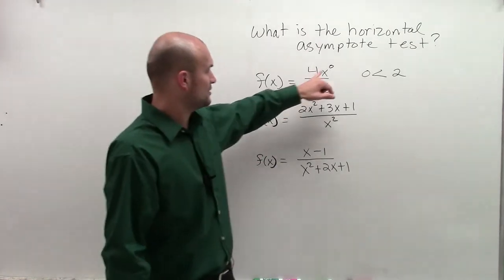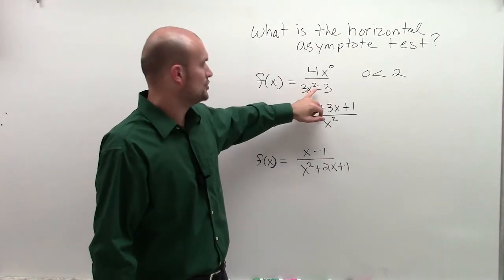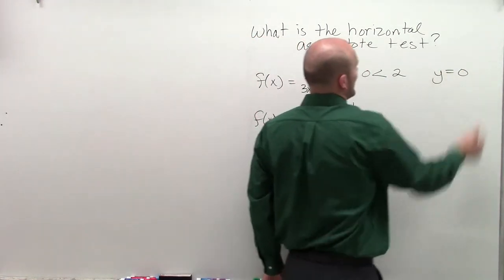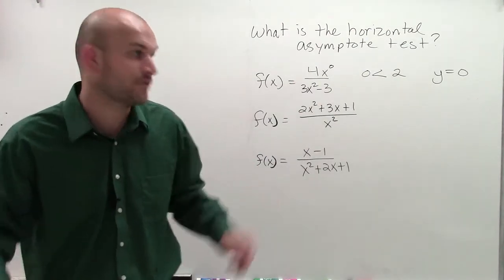So whenever your degree, your leading term in your degree, is less than your degree in your numerator, you have a horizontal intercept when y equals 0. All right? So at y equals 0, which is the x-axis, you're going to have a horizontal asymptote.